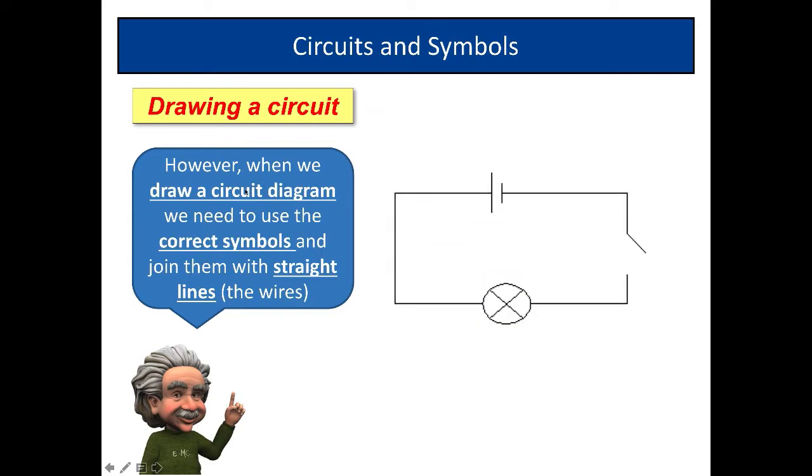Now notice when we draw a circuit diagram we need to use correct symbols. And also we join them with straight lines. The straight lines represent the wires.